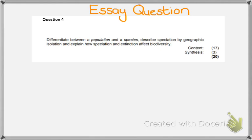Okay, so let's break up this particular essay question. This question is from a Paper 2, and it is focusing in on our knowledge around natural selection and speciation. So the question says, differentiate, which is an important question word for us to know, means to tell the difference between a population and a species. Then it goes on to ask you to describe speciation by geographic isolation, and then explain how speciation and extinction affect biodiversity.